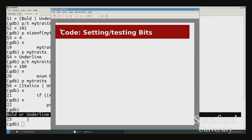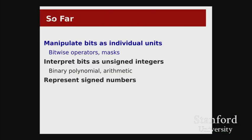Rather than storing three separate booleans for bold, italics, and underline, I can pack them into a single variable and turn on and off these bits using the bitwise operators. When we start doing later work with numbers, we'll have other reasons to turn on and off individual bits using these bitwise ops. Now I want to look at interpreting these bit patterns as actual numbers.